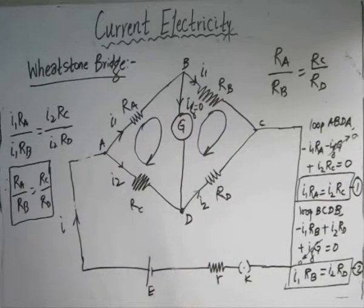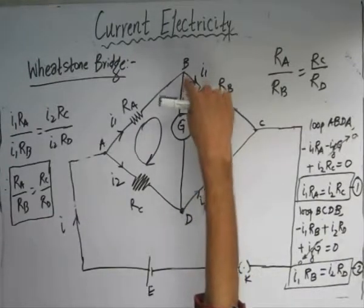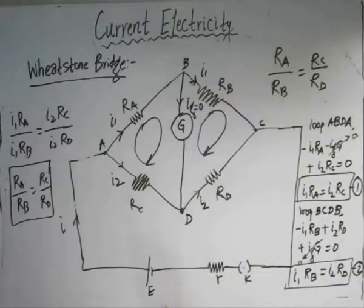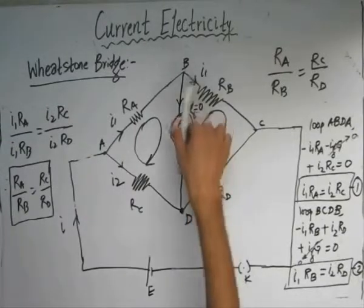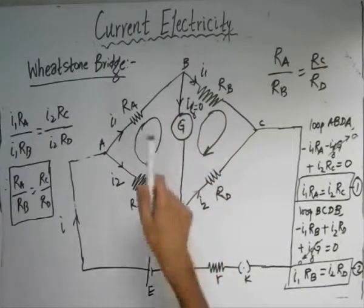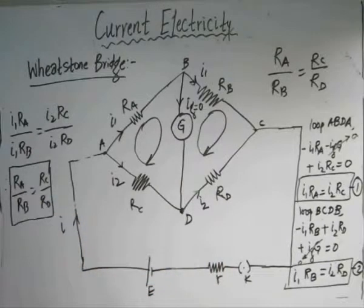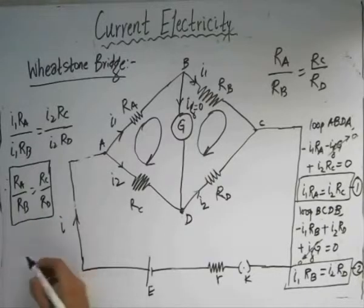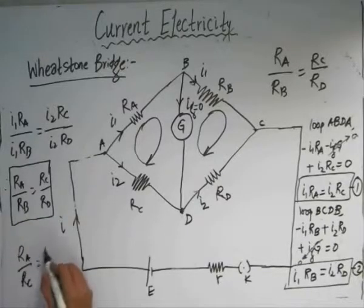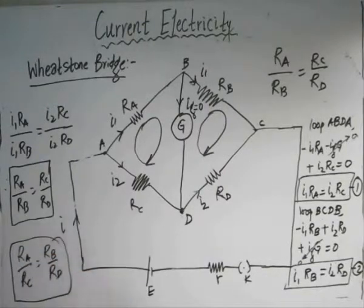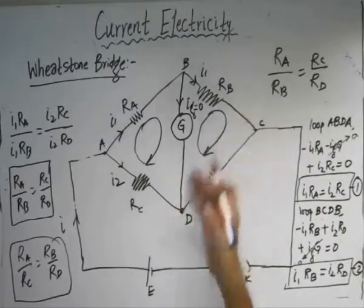In other words, the potential at points B and D are the same — there is no potential difference. Conversely, if there is no deflection in the galvanometer, this implies the resistors are in this ratio. We could also write this as Ra/Rc = Rb/Rd. Since these are ratios, we can interchange the positions of the resistors — meaning Rb can be placed in the position of Rc.